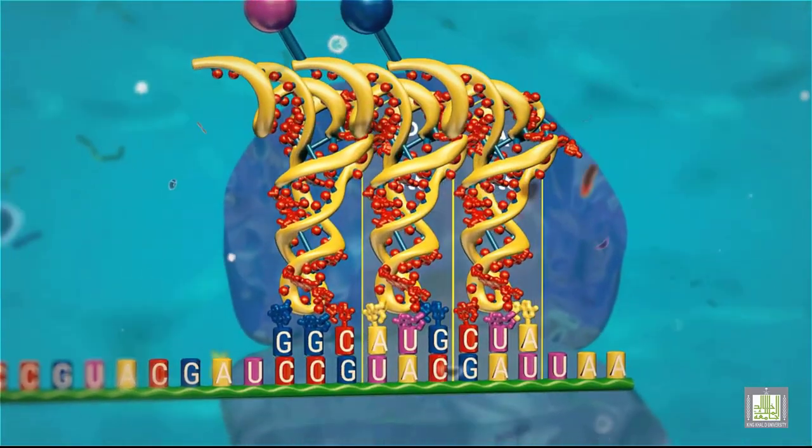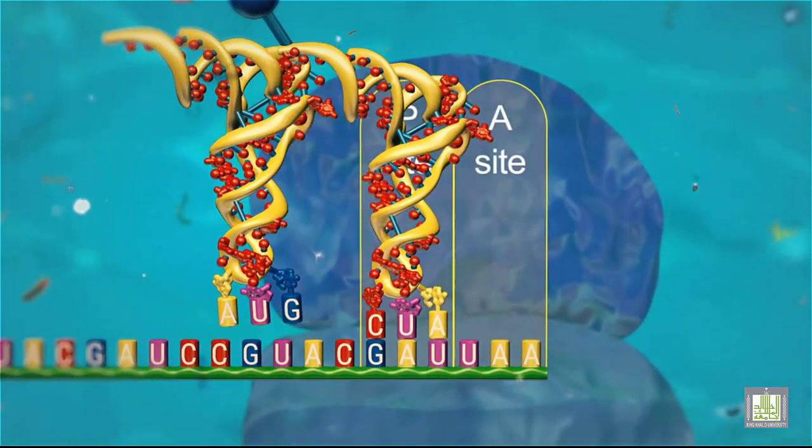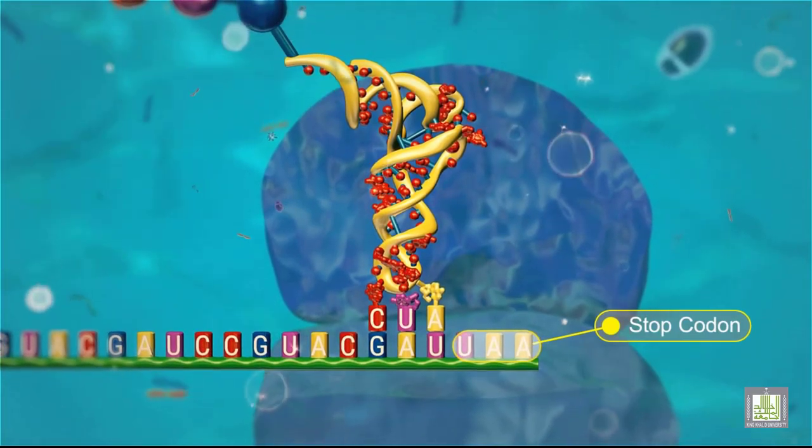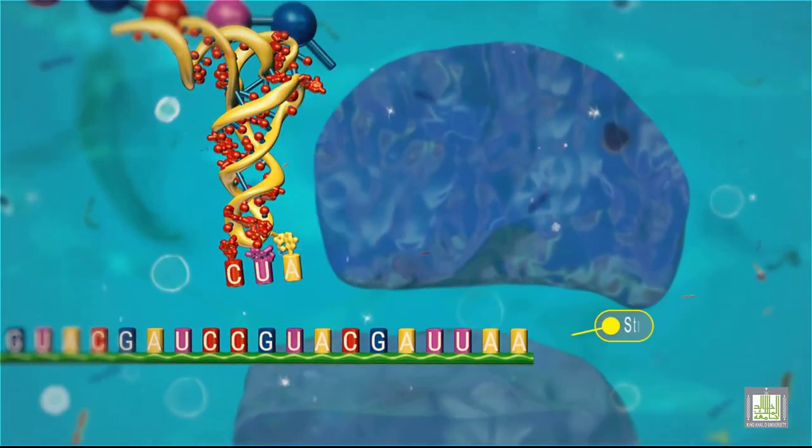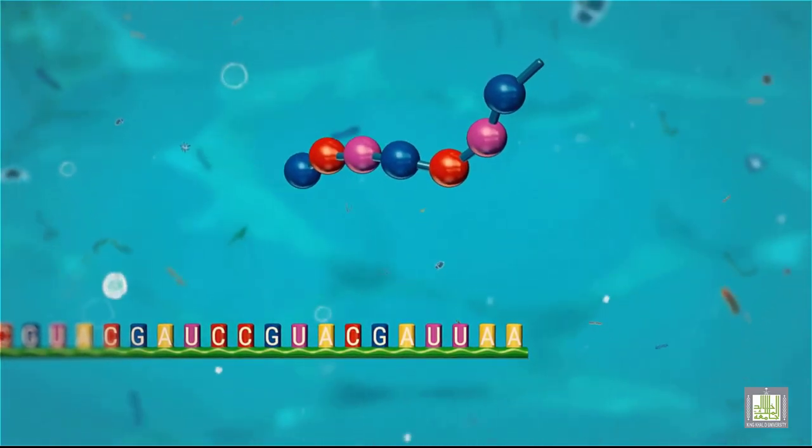Elongation of the polypeptide is terminated when the ribosome reaches a codon that does not code for an amino acid, called a stop codon. The ribosome dissociates into the smaller and larger subunits, and the messenger RNA and protein are released.